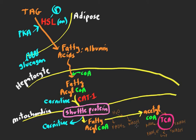Why do we want ATP during the fasting state in the liver? We want it to run gluconeogenesis. Another place this acetyl-CoA can go — which we'll show in another video on ketones — is conversion to ketone bodies, which leave, go into the blood, and are taken up by cells like the brain or other insulin-independent tissues that rely on secondary fuel sources. So the fat cell is feeding the liver fatty acids, they get oxidized, making acetyl-CoA needed for ATP to run gluconeogenesis and to provide substrate for ketones that go off to places like the brain.